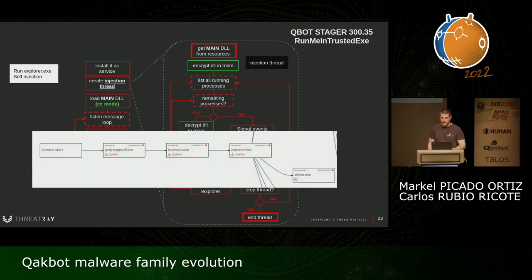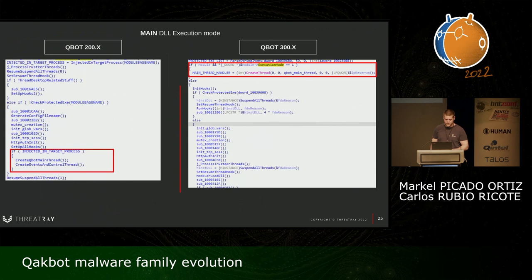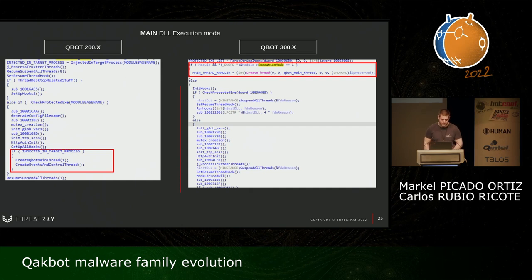Here you can see how they inject into Explorer and continue execution from there. In this version, what has changed in the main DLL is a check on the execution mode at the beginning. If hook mode is set, it only does the hooks. If command and control mode is set, it only does the main thread. In the code you can see this field called Secure Mode — if it's set, it only creates the thread that handles communication. If it's not set, it does the hooks. In the previous version, once it did the hooks, it would also check if it's injecting into a target process and create the thread for communication.